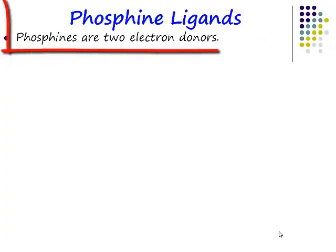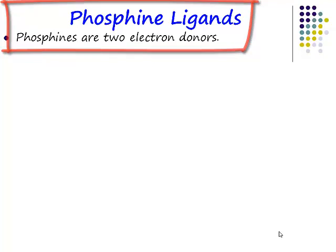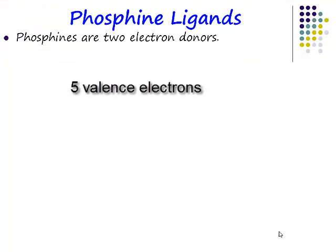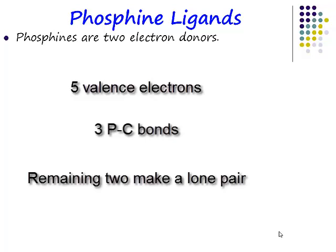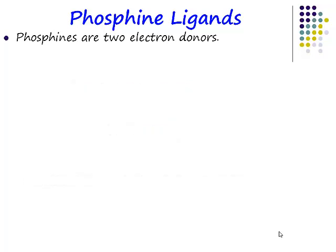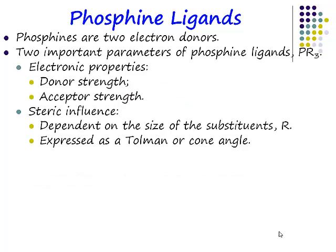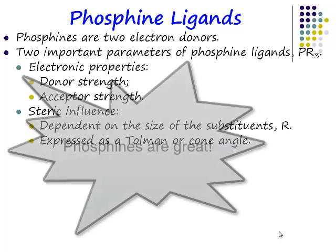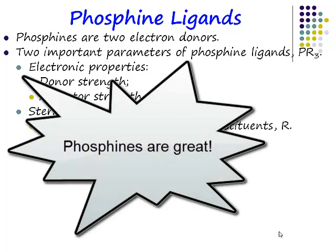Phosphines are two-electron donors. Phosphorus is in group 5 of the periodic table and has five valence electrons. Three of those are used to make the phosphorus-carbon bonds of your alkyl ligand. The other two are a lone pair which is available to donate to the transition metal centre. So a phosphine ligand is a two-electron donor.